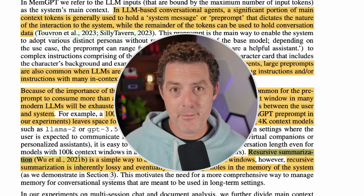MemGPT splits its main context into three components. First, system instructions telling the LLM how to behave — read-only, pinned to main context. Second, the conversational context — a queue of recent event history, read-only with a special eviction policy that moves things out when space runs out. Third, the working context — both readable and writable by the LLM processor via function calls, essentially where you dump information and read from it whenever needed.